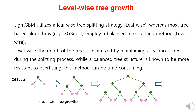LightGBM uses a leaf-wise tree splitting strategy, while most tree-based algorithms like XGBoost use a level-wise, or balanced, tree splitting method. The level-wise method minimizes the tree depth by maintaining a balanced tree during the splitting process. As shown in the picture, each level of the tree is split into right and left nodes in a balanced manner. While a balanced tree structure is known to be more robust against overfitting, this method can take longer to train because it has to handle all nodes in a balanced way.